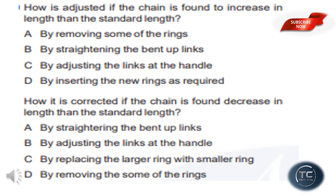How is it adjusted if the chain is found to increase in length more than the standard length? The methods are: by bending up links, by adjusting the links at the handle, by inserting new rings as required, or by removing some rings. To shorten the chain, we need to remove some rings or bend up the links.